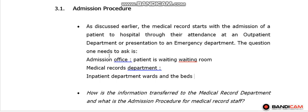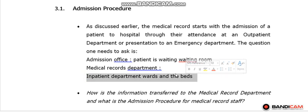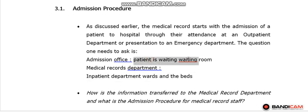How is the communication made between the admission office and the medical records department to let the patient enter the inpatient department and receive medical service? The patient is sitting in the waiting room, and a telephone call is made between the admission office and the medical record department. The admission clerk has only the patient's ID number and name, and wants to know if this patient has a previous medical record or not.